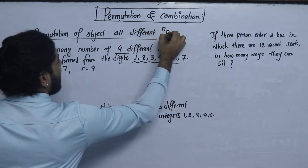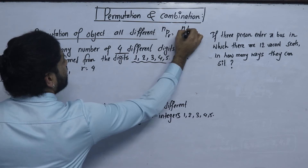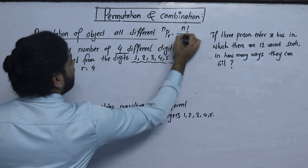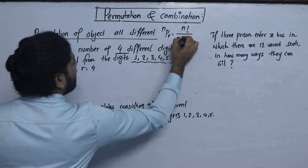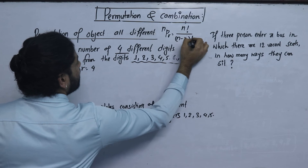The formula for permutation of objects all different: nPr = n factorial divided by (n minus r) factorial.